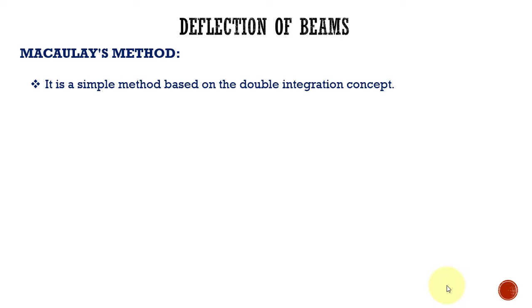In this video lecture, I am going to explain how to use Macaulay's method to determine the deflection in a simply supported beam with an example problem. Before moving on to solving the problem, let me give an overview about what Macaulay's method is and how it works. It's a simple method which works based on the double integration concept, in which the bending moment is given by the equation EI d²y/dx².